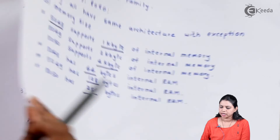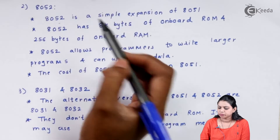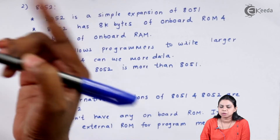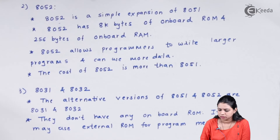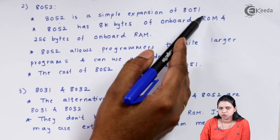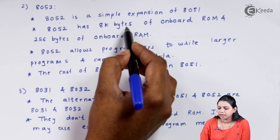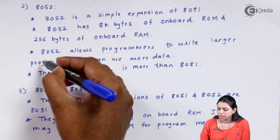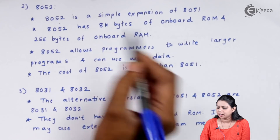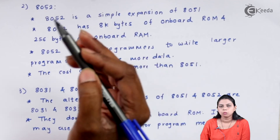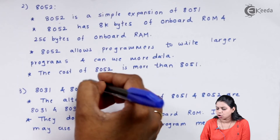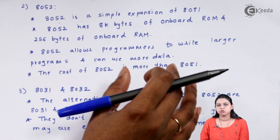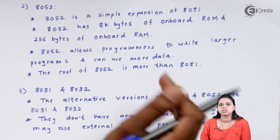The next series is called 8052. 8052 is an expansion of 8051 and has double the memory of 8051. It has 8 kilobytes of onboard ROM and 256 bytes of onboard RAM. 8052 allows a programmer to write a larger program and can use more data than 8051. The cost of 8052 is also more than 8051.